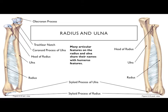At the very distal end of the ulna, there's a small thin projection called the styloid process — it sits near your wrist. We've seen a styloid process before in the skull, on the temporal bone.